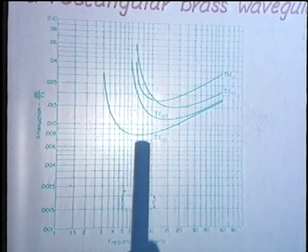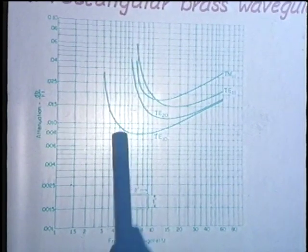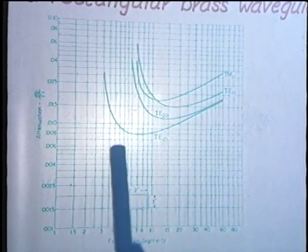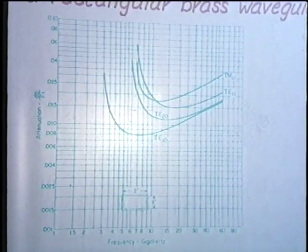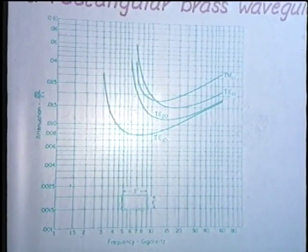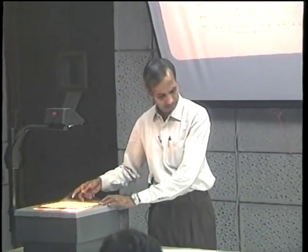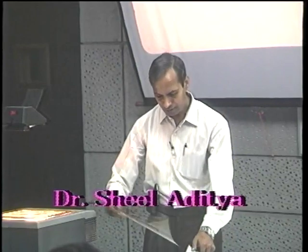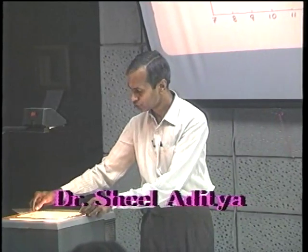When operating sufficiently far from the cutoff frequency, the variation in the wave impedance is also fairly small. Therefore, this range becomes one where the waveguide can be utilized quite efficiently and effectively without too much distortion in the signal. X-band waveguides, used more frequently in laboratories, have slightly different dimensions and are also utilized in the TE 1,0 mode; their attenuation variation is also shown.